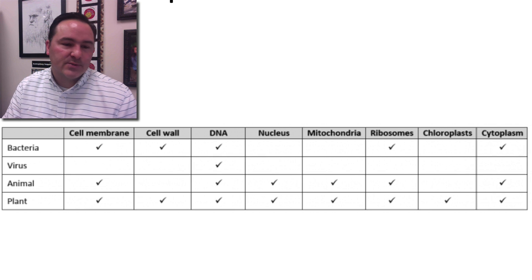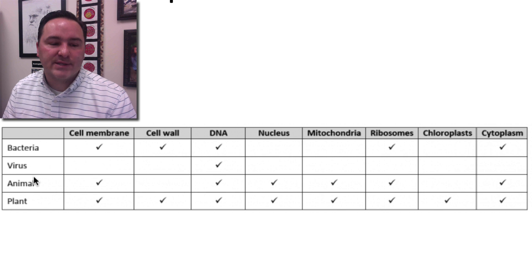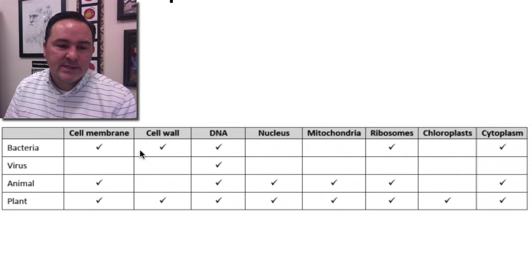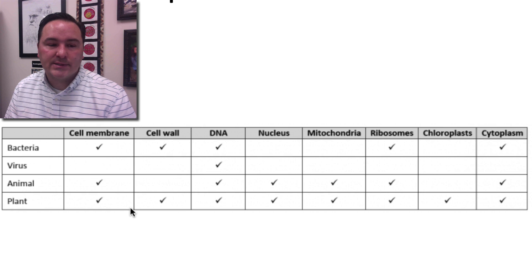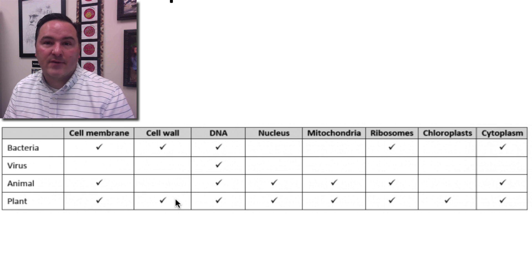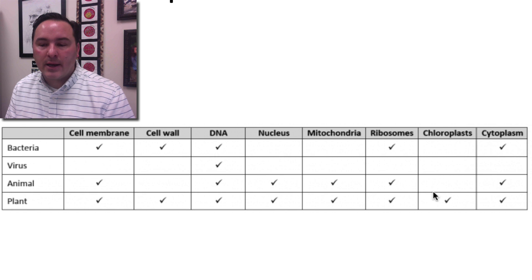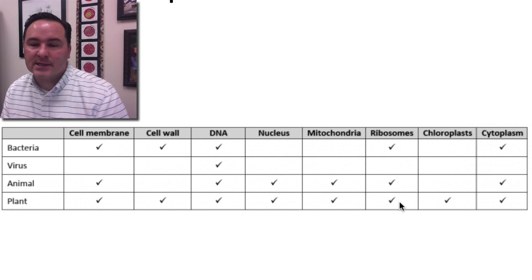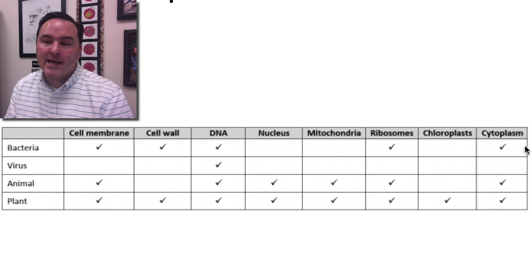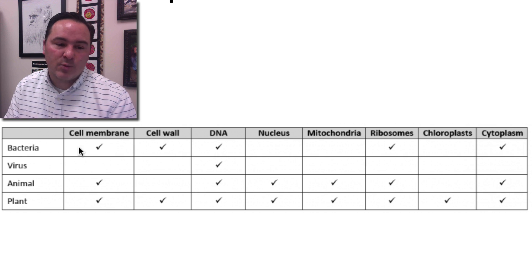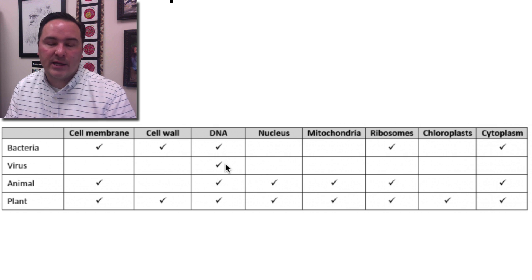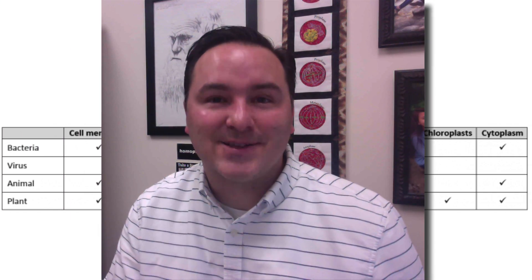To summarize, comparing bacteria, viruses, animals, and plant cells: only bacteria, animal, and plant cells have cell membranes. Only bacteria and plant cells can have a cell wall. All of them have DNA. Only animals and plant cells have a nucleus and mitochondria. Only bacteria, animal, and plant cells have ribosomes. Only plant cells have chloroplasts. And everything but viruses has cytoplasm. This is another reason why viruses are lacking everything except for DNA, and why we don't count viruses as being alive. That's a quick intro to cells — thank you.